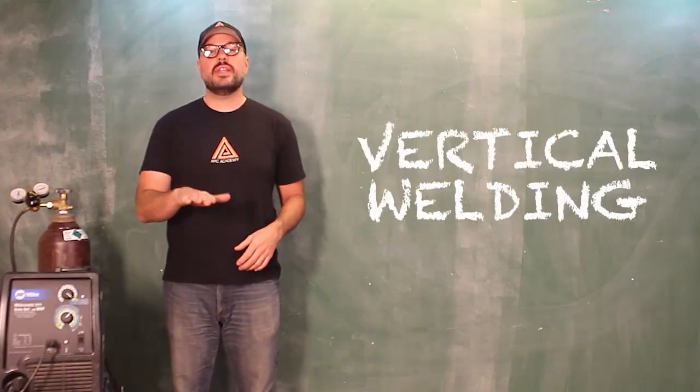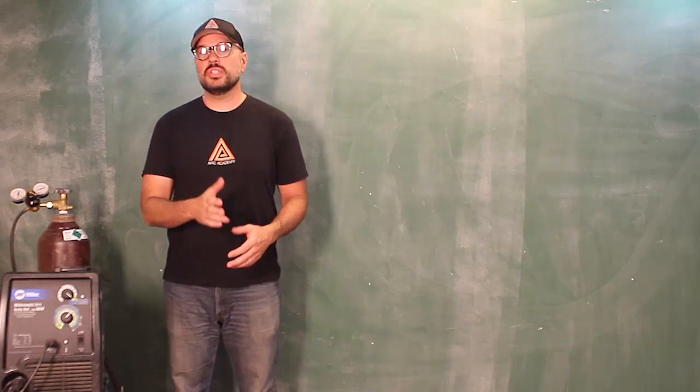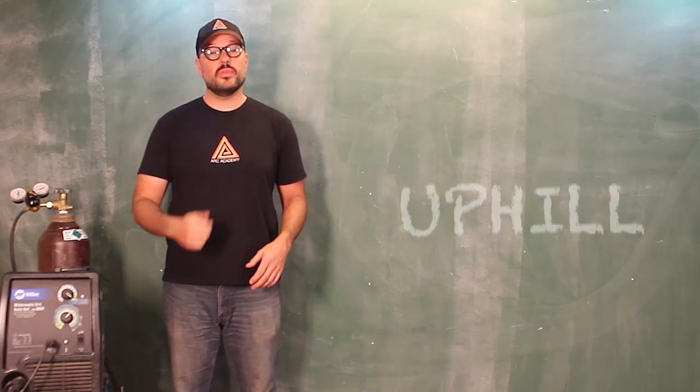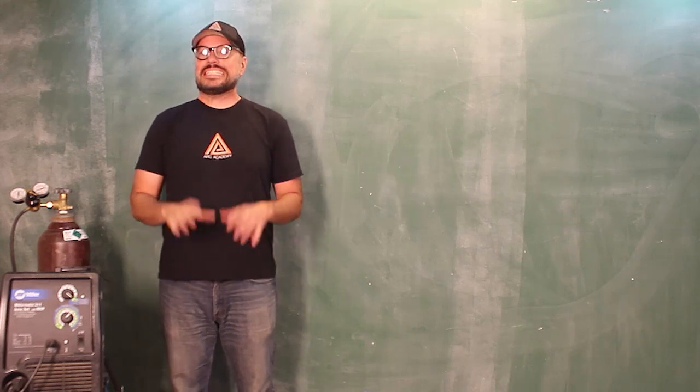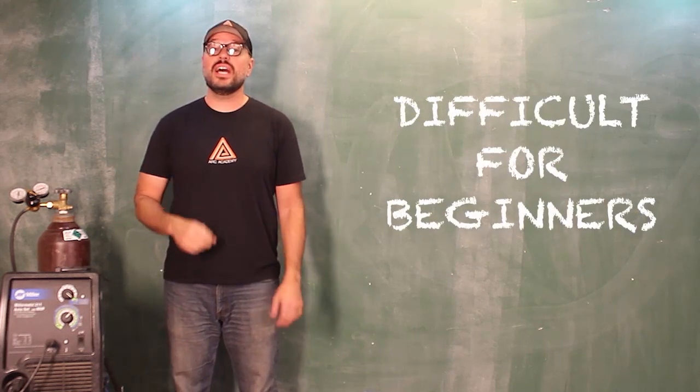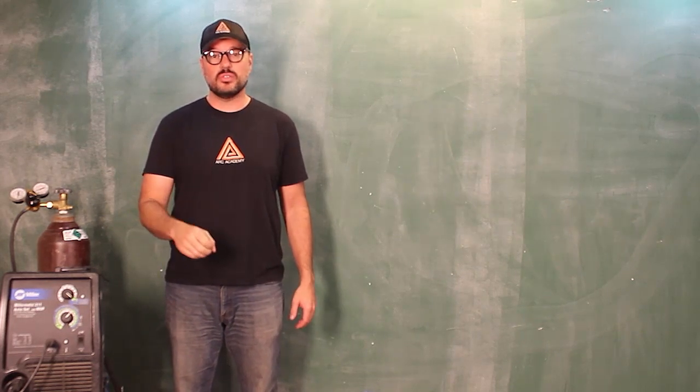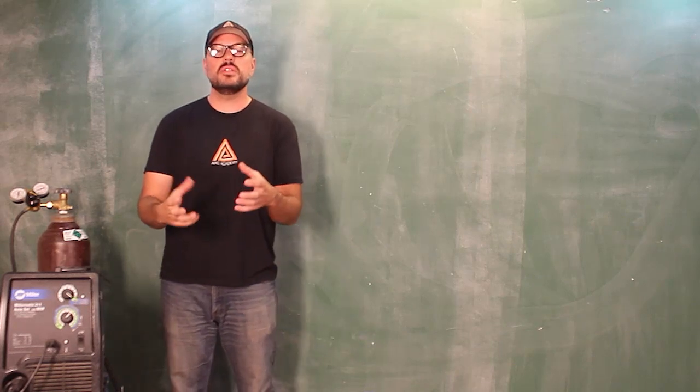Vertical welding, just like flat or horizontal position, has two directions: uphill and downhill. Uphill is pretty hard to do—I don't recommend starting there. So for most hobbyists and beginners, you want to go downhill.